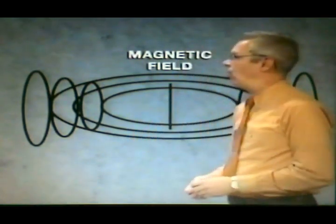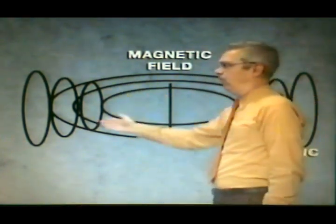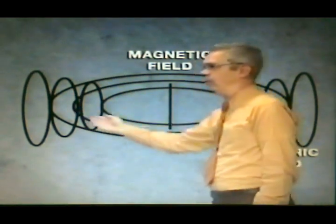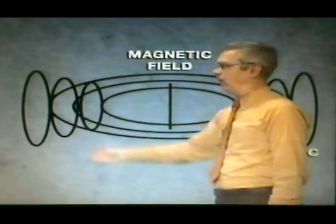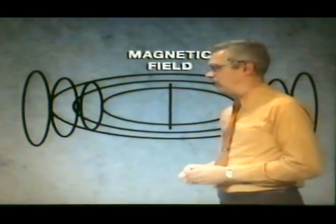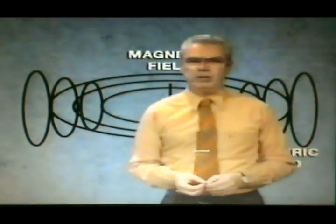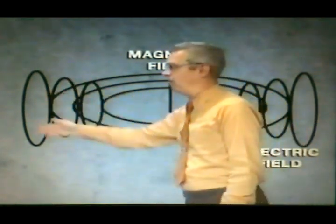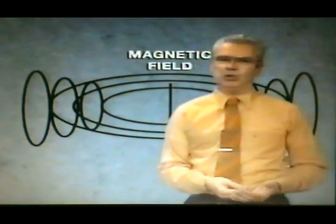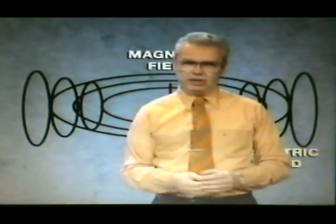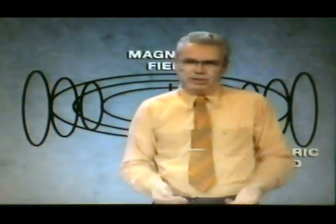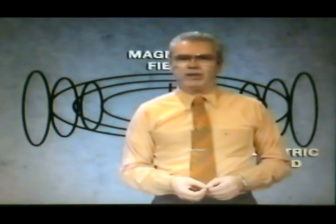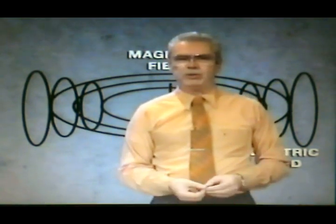Maxwell's equations also say that if the electric field is varied quite rapidly, it'll produce another magnetic field, something like this, in all directions. And since the magnetic field thus produced is varying rapidly, it produces another electric field, which produces another magnetic field, and the whole process continues with these fields expanding and extending further and further away from the source at the speed of light. And so this is how an electromagnetic wave, or a radio wave, is produced.